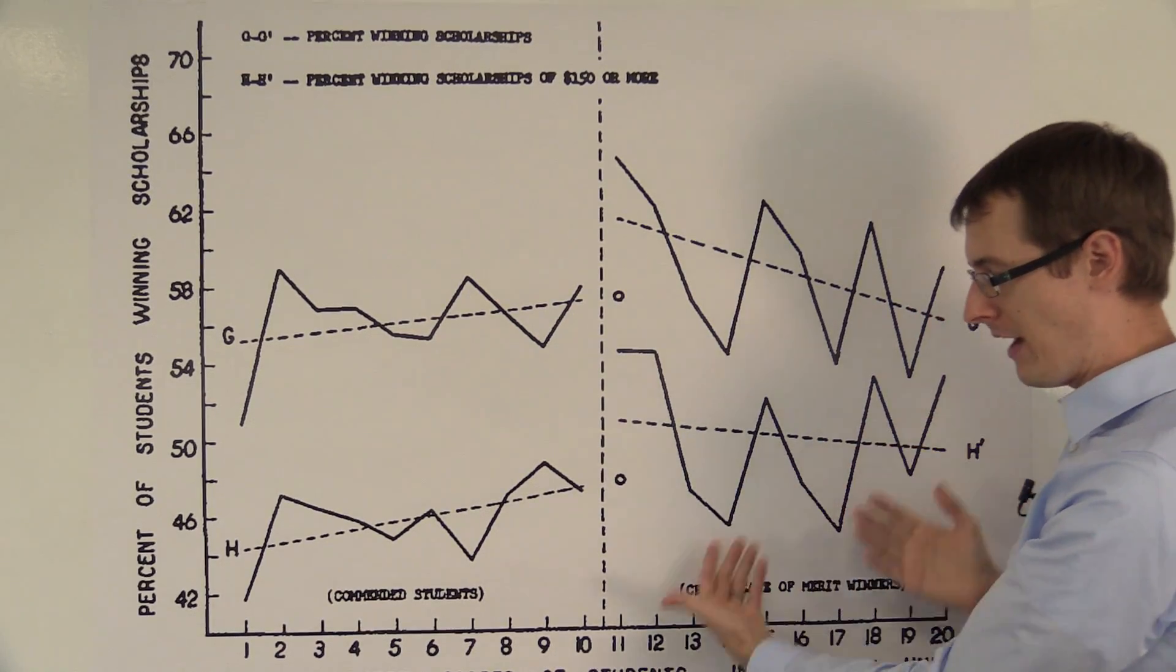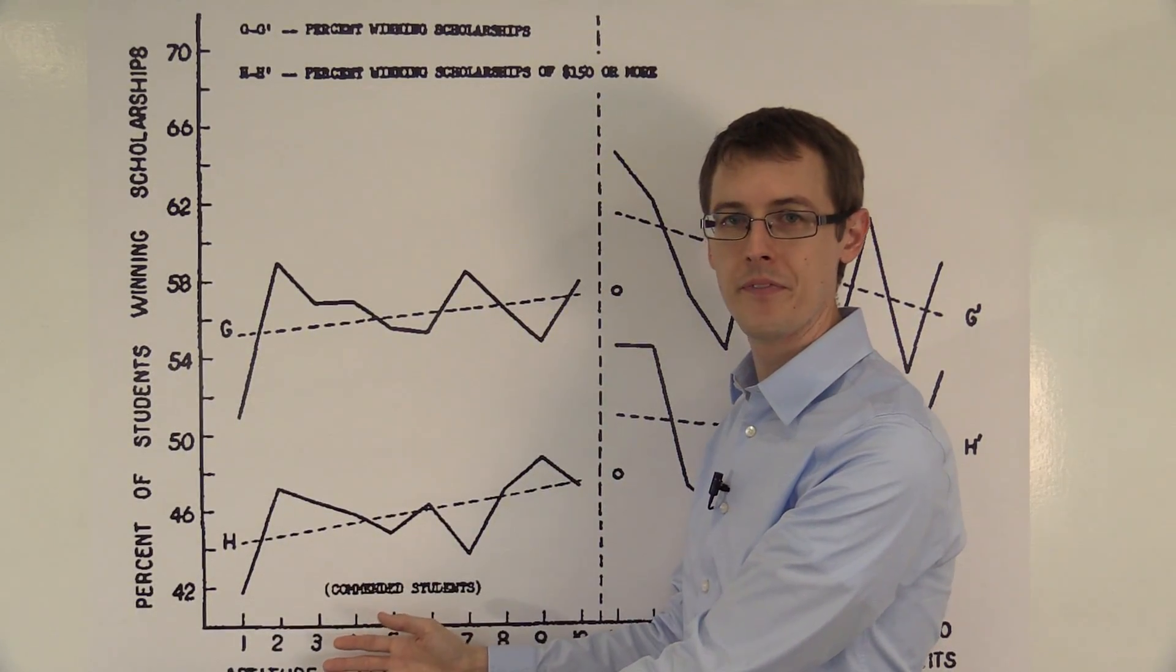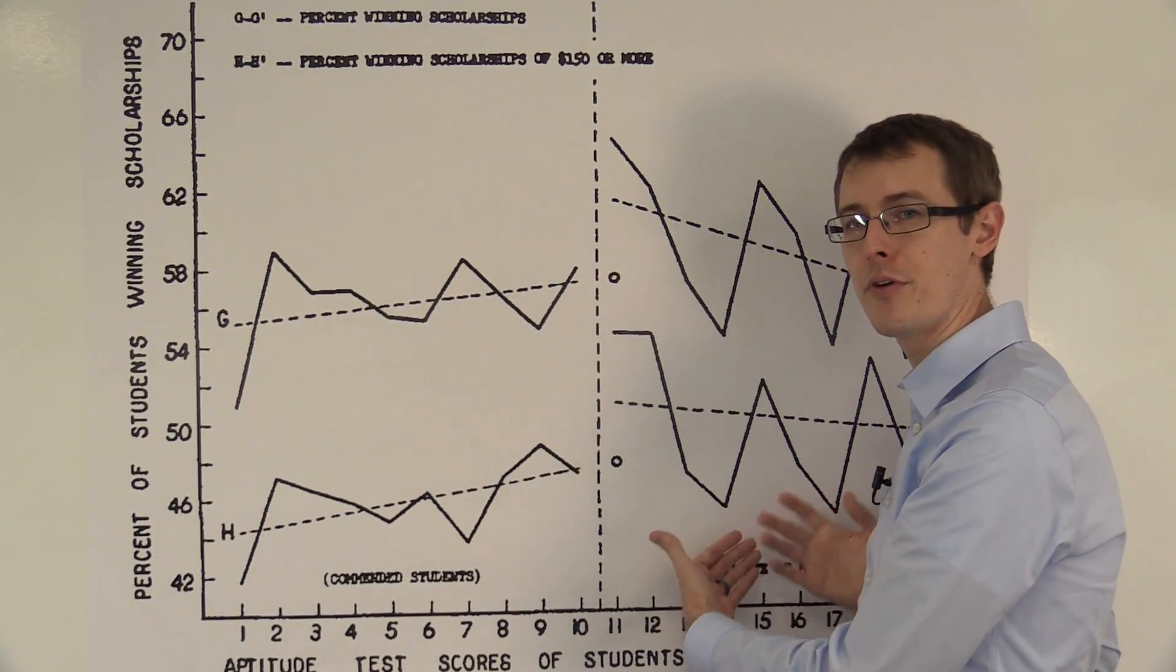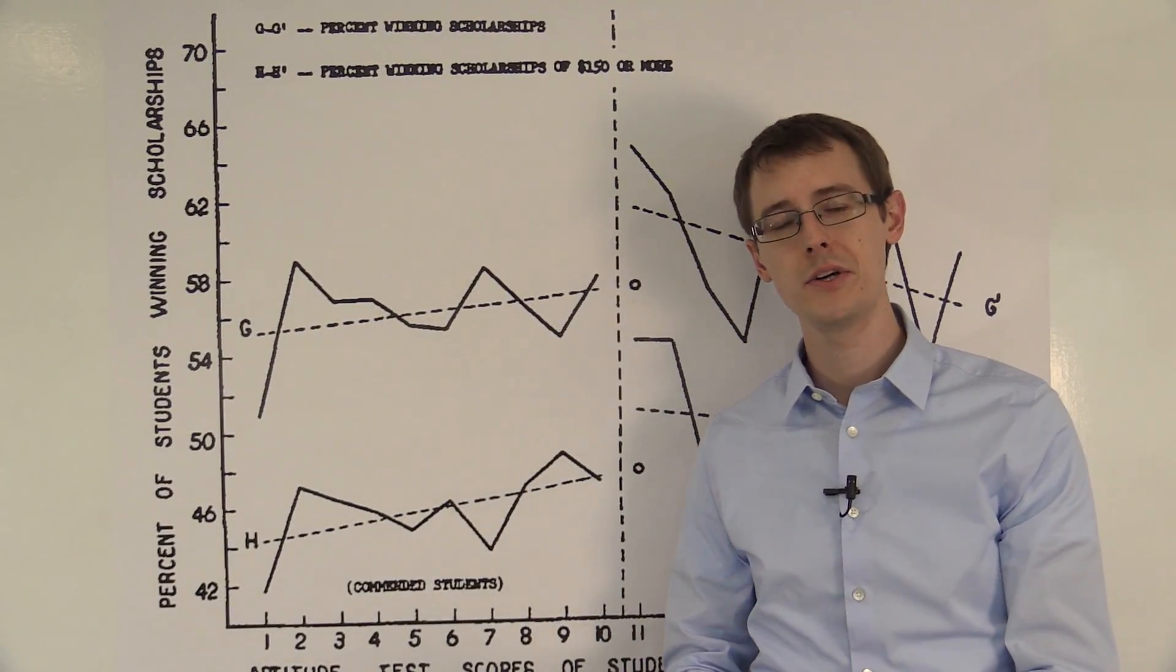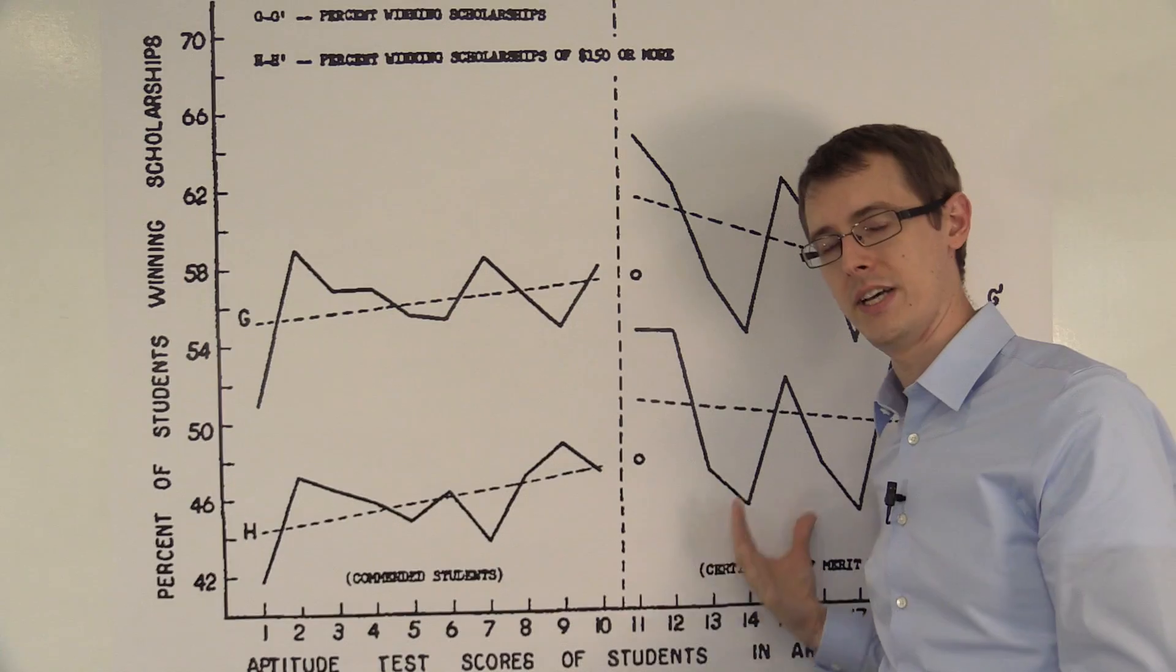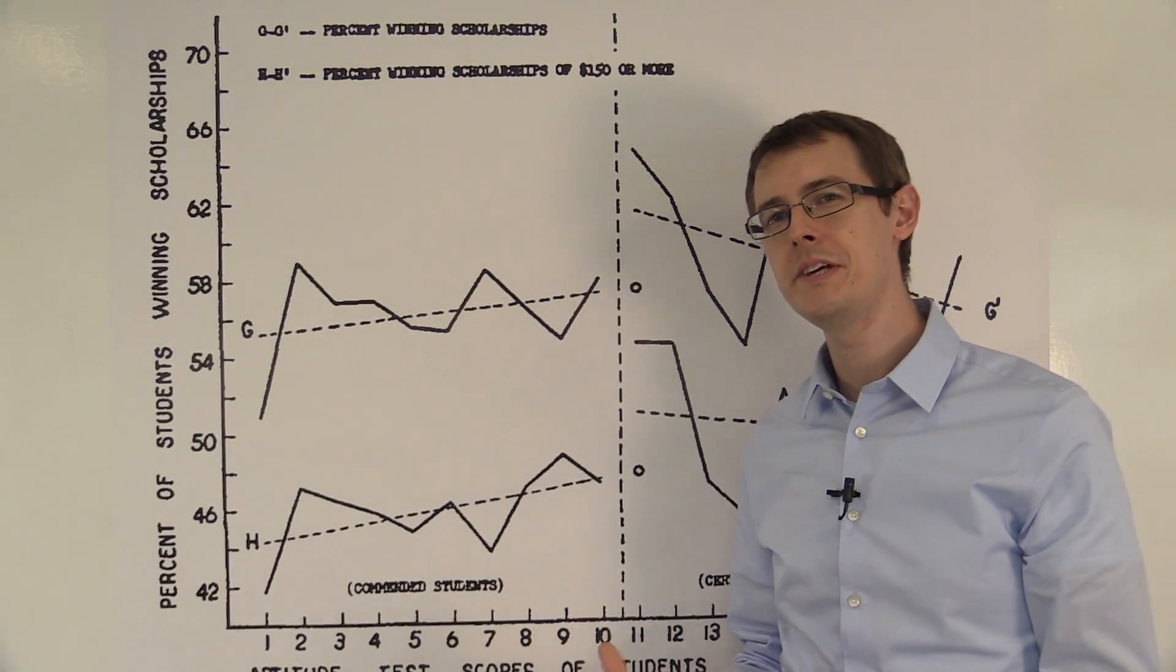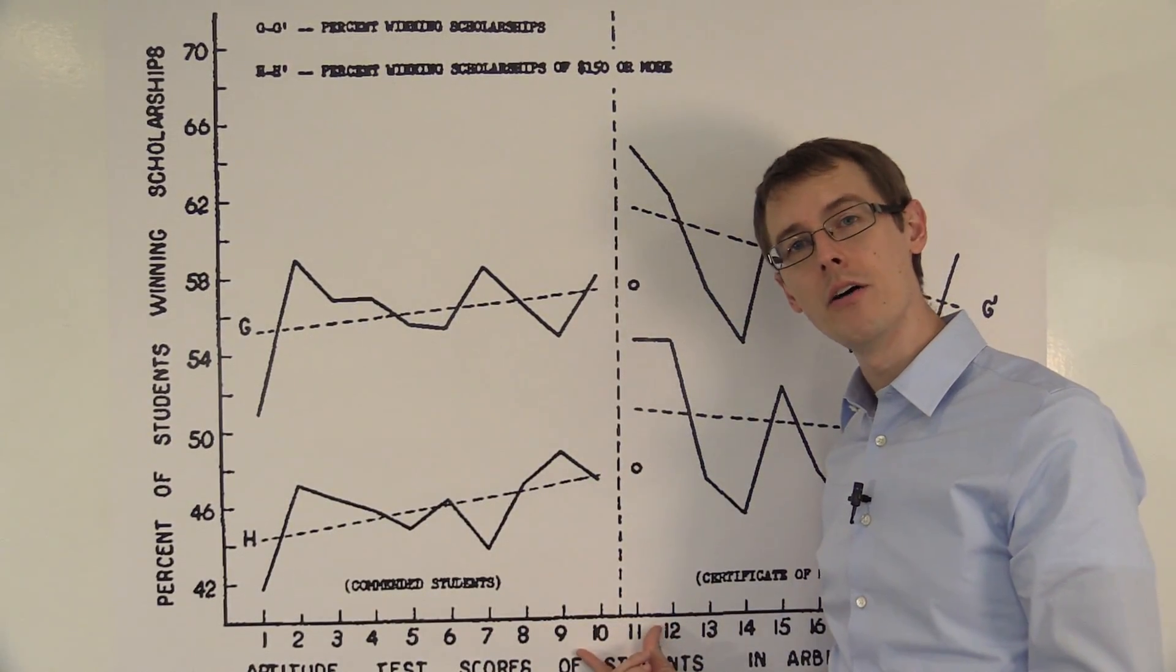Because the people over here have higher test scores than the people over here, in addition to the fact that the people over here got their certificate of merit. So that's not a clean comparison. We've got that confounding variable, test score. We only really believe the comparison when we're doing it close to the cutoff.